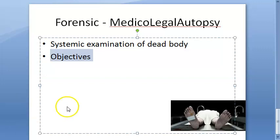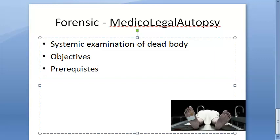The prerequisites for a medico-legal autopsy are: the dead body itself, a requisition from an authorized person such as police or a magistrate — note that approval is required, a registered medical practitioner (not just anybody) usually a medical officer or forensic expert, and a mortuary or authorized center. You cannot conduct the autopsy just anywhere.